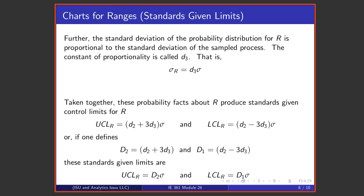In addition, it's possible to work out what the standard deviation is for the probability distribution of R. It turns out to be again proportional to the process standard deviation. This time the constant of proportionality is called little d₃. So what is little d₃? It's precisely the ratio of the standard deviation of a range—that is, how variable are ranges—compared to what is the process standard deviation.